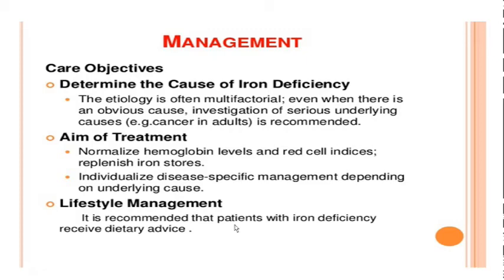So the management: basically we have to understand the cause of the anemia, as the etiology can be variable. We definitely have to understand the cause of iron deficiency, especially certain dreadful causes like cancers in older adults which manifest as blood in stool — that can be another cause for chronic loss of iron through the GI tract. So the aim of the treatment is to normalize the hemoglobin level and the oxygen carrying capacity of the blood, and individualize the specific management.